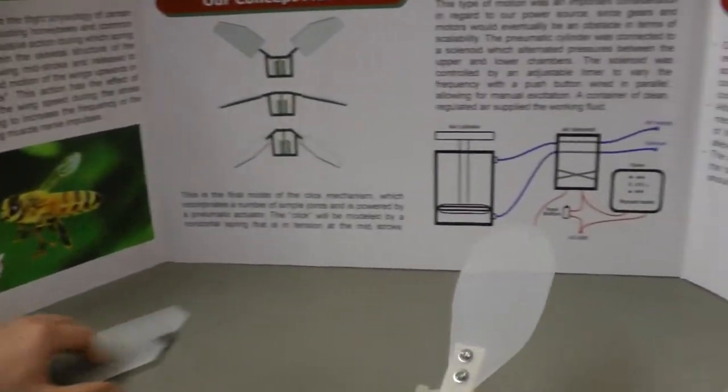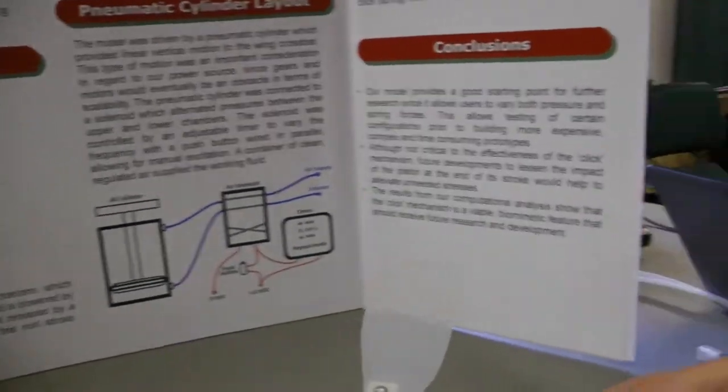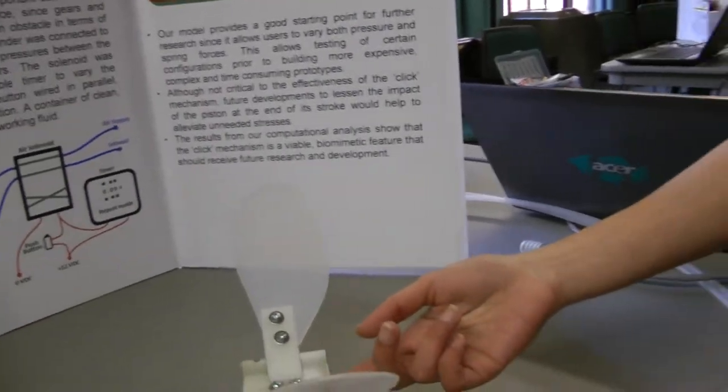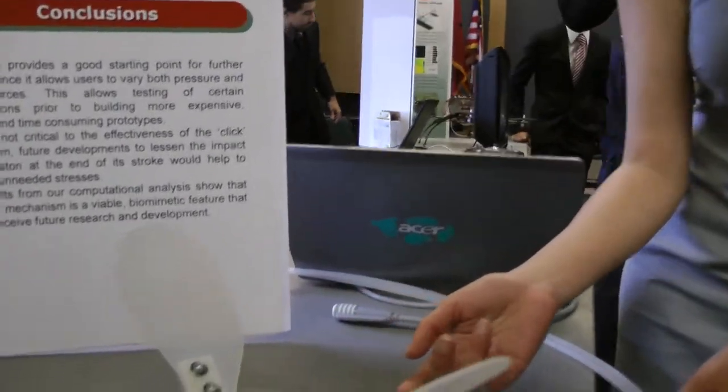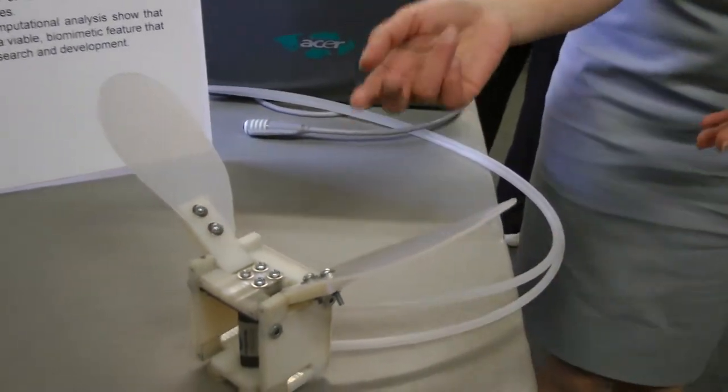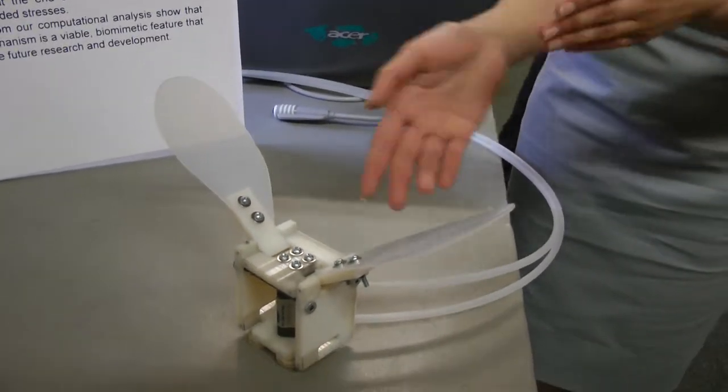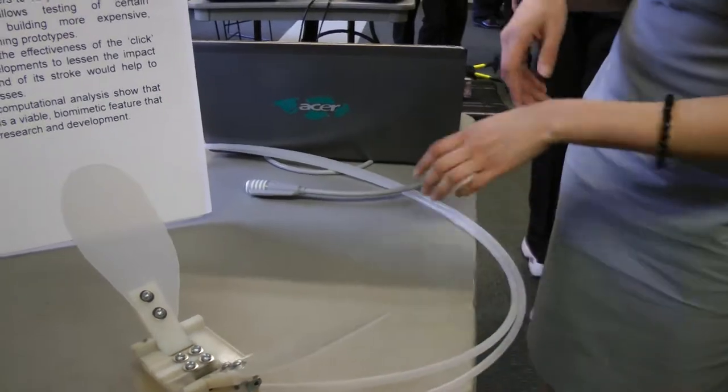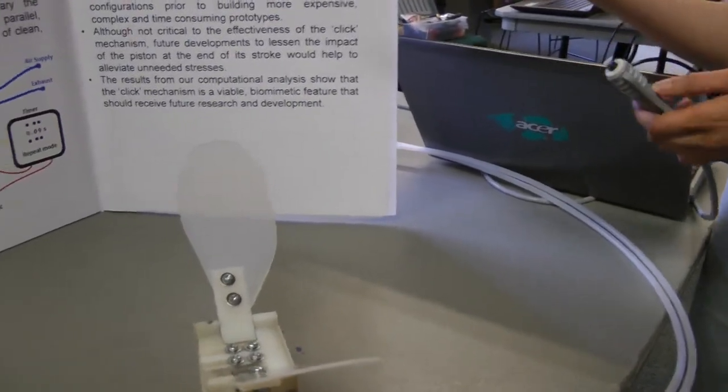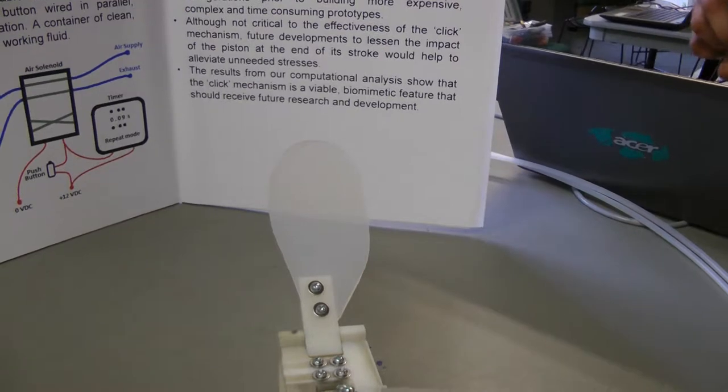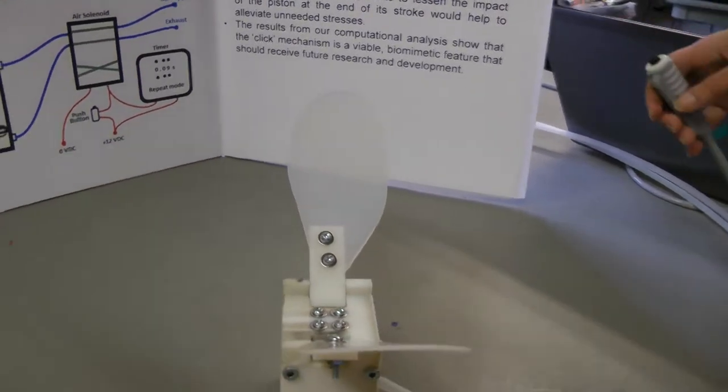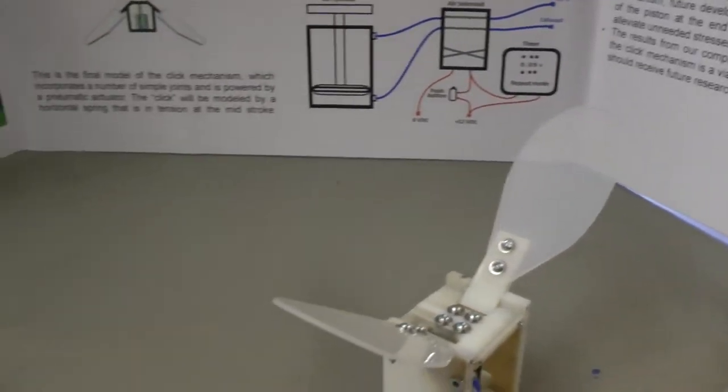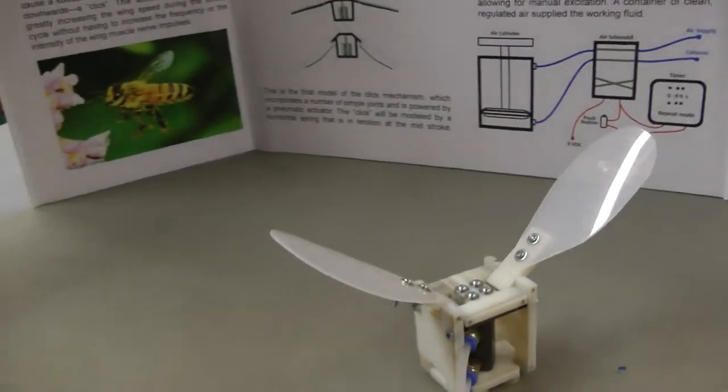In terms of how the model is being actuated, it's being actuated via an air cylinder and solenoid. This provides a reciprocating motion up and down. Jim is actually getting more air. We ran out because everyone was using the air. We could do a demonstration once he comes back.